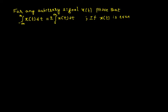Welcome to the video lecture on even and odd parts of a signal. In this video we will consider an arbitrary signal x(t) and the task is to prove that the integration from minus infinity to infinity of x(t) dt is equal to 2 times the integration from 0 to infinity of x(t) dt, provided x(t) is even. So we will start doing that.